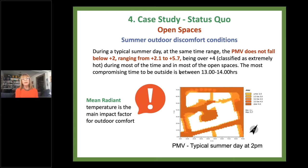These existing material conditions of the open spaces cause significant discomfort during the summer. The PMV — predicted mean vote — shows four points, which is classified as extremely hot on the PMV scale. This occurs most of the time and in most of the open spaces. Radiant heat is the main impact factor causing outdoor discomfort.